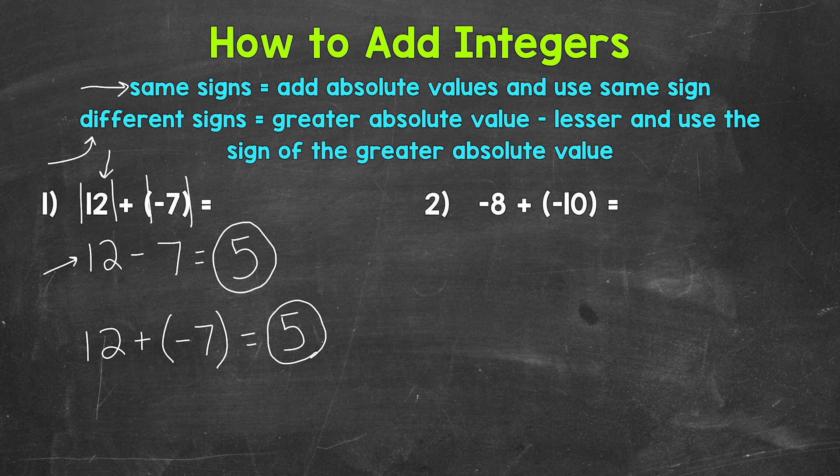So let's start by taking a look at the absolute value of negative 8 and negative 10. The absolute value of negative 8 is 8, plus the absolute value of negative 10, which is 10. Now we add those absolute values because again we have the same signs. 8 + 10 = 18.